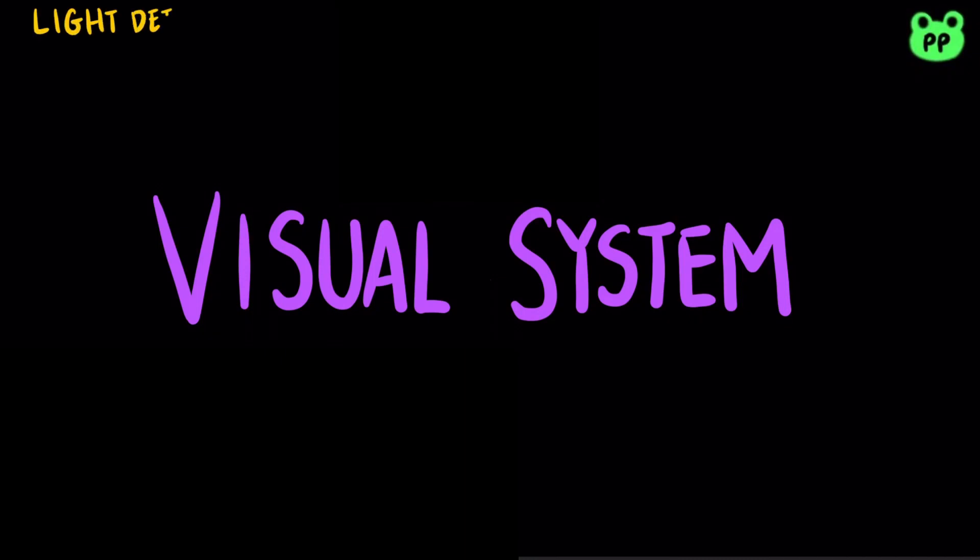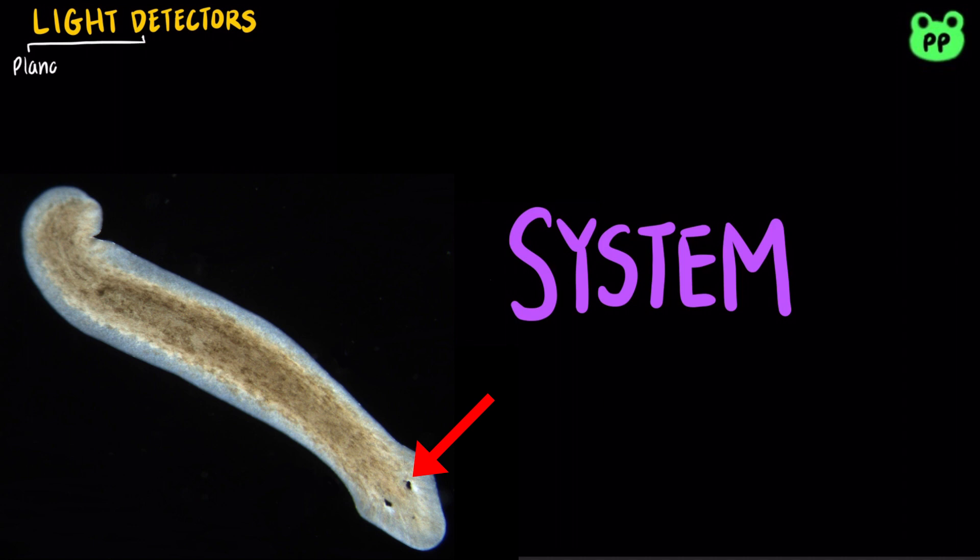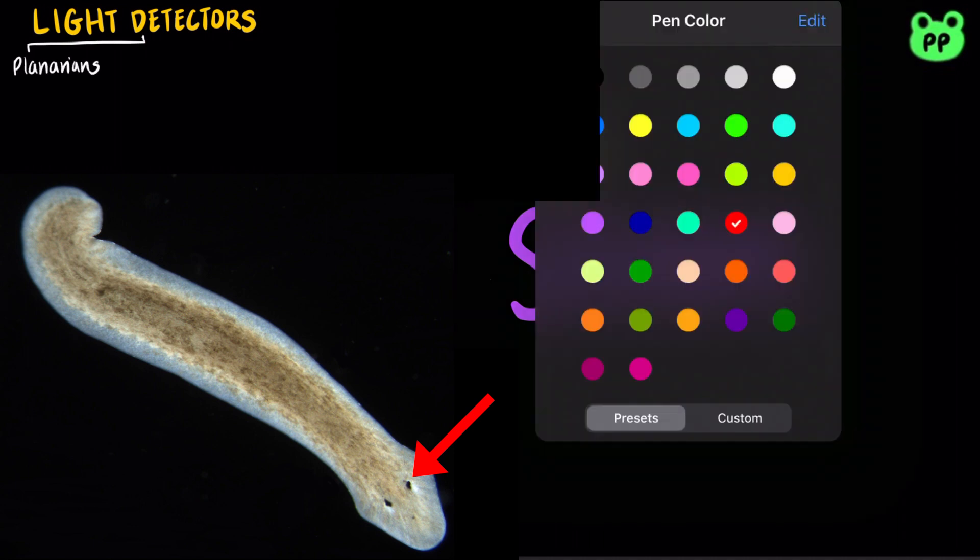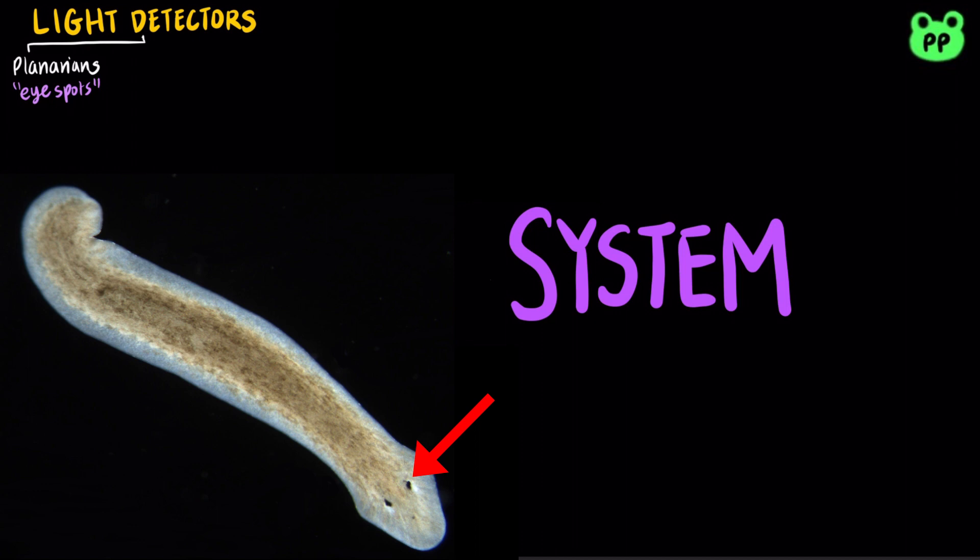Most invertebrates have a light-detecting organ. One of the simplest is the ocelli of the planarians, also known as eye spots, which provides information about light intensity and direction but does not form images.